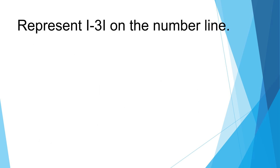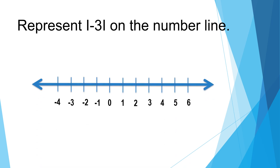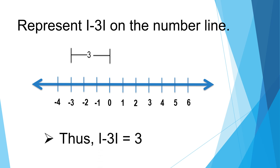Represent the absolute value of negative three on the number line. What is the distance of negative three from zero? Let's count how many units. From zero: one, two, three — three units. Thus, the absolute value of negative three is equal to three.